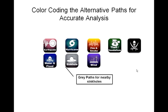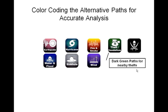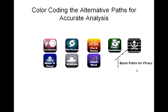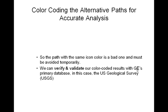Blue paths represent nearby floods, gray paths represent nearby sinkholes, purple paths for nearby strong winds, a dark green path for nearby thefts, and finally a black path for piracy, which has been occurring more often in recent years.